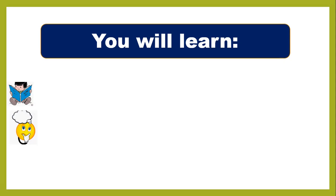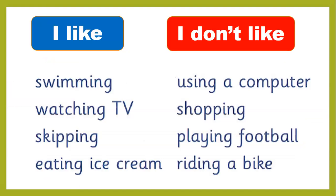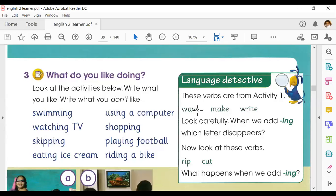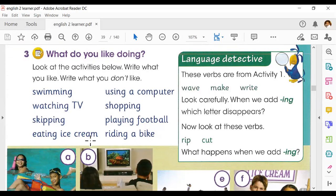In this lesson you are going to learn about reading — you have to read and then answer. You have to learn about the spelling rules. You will read about what you like and what you don't like. We also discussed spelling rules about how we add ING forms. Here is the reading content — I'm going to show you the book. Here is your English Learner's Book, page number 41. You can see: what do you like doing? You have to read and decide what you like and what you don't like.